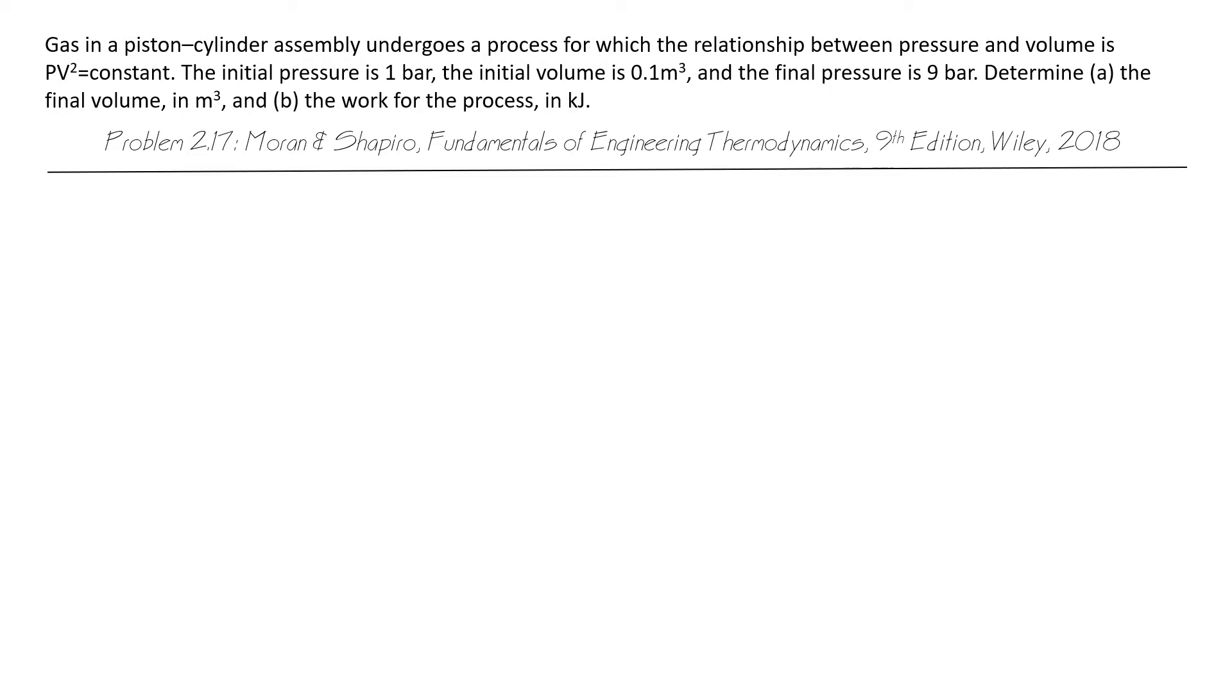Initial pressure is one bar, the initial volume is 0.1 cubic meters, and the final pressure is 9 bar. We want to determine the final volume in cubic meters and the work for the process in kilojoules.